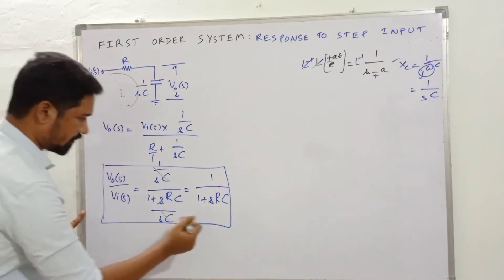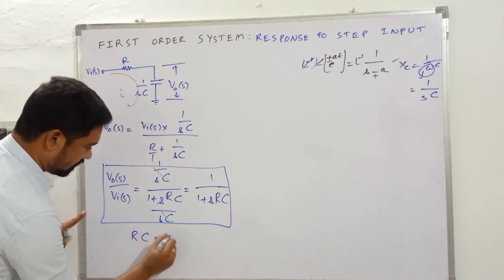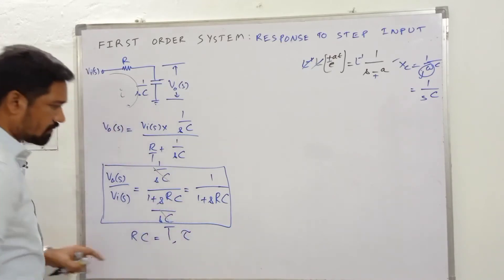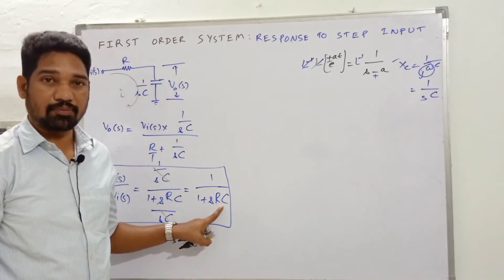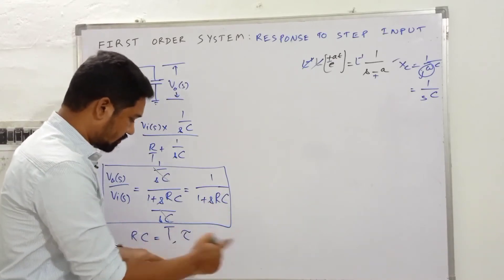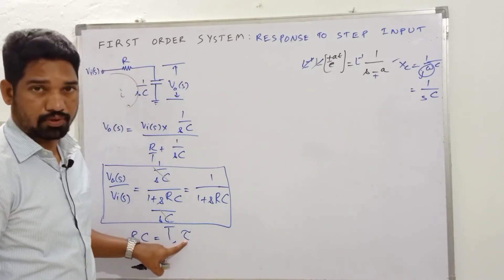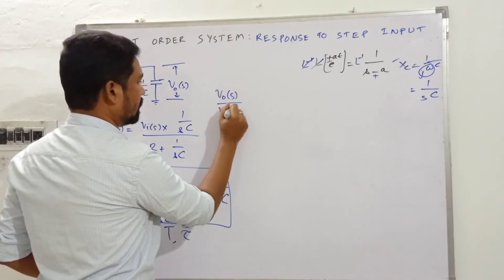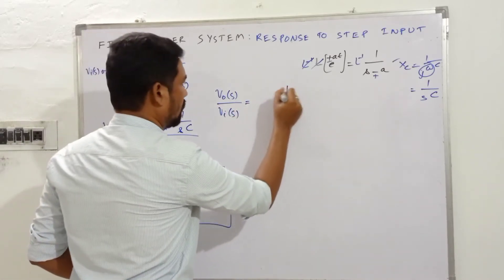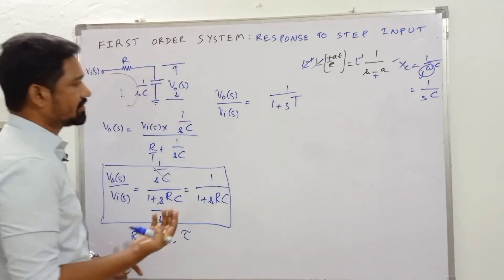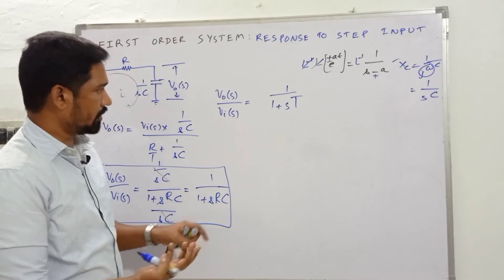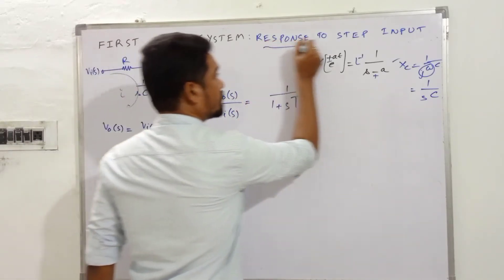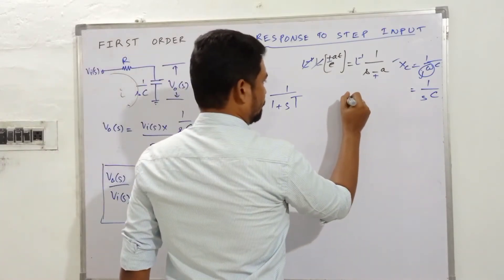This is the transfer function of a first order system. The product RC is known as the time constant, denoted by T or τ (tau) depending on the author. So V_out(s)/V_i(s) = 1/(1 + sT). From this we can also identify the pole location for the first order system, which we will show shortly. The main focus now is on the response to a step input.